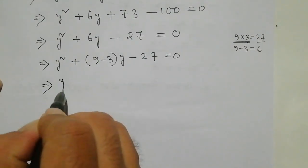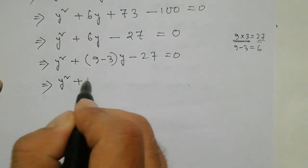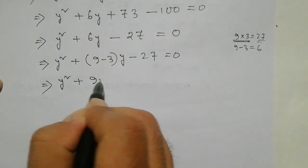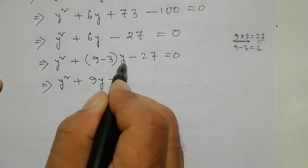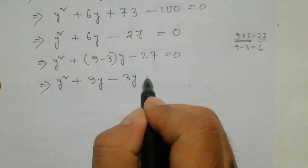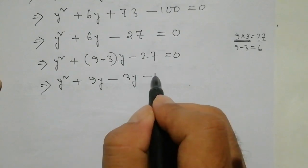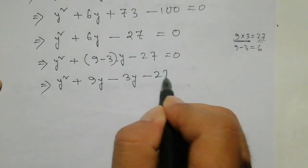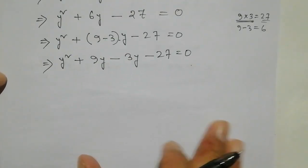So I am going to make Y squared plus 9y minus 3y, and Y is 27 equals 0.